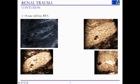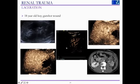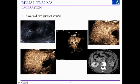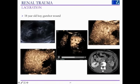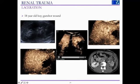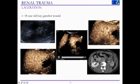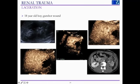Here is an example of a very small contusion following an RTA: it was very difficult to see on the baseline scan, but after contrast you can see this small area of contusion in the renal parenchyma. Another example is a gunshot wound, which wasn't clearly shown on the B-mode scan, but following contrast administration you could delineate the tract going through the mid-lower pole of the kidney — confirmed on the CT scan.